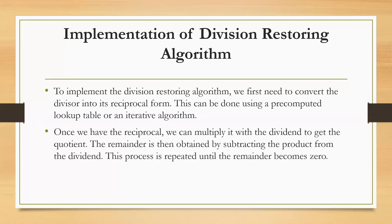After each subtraction or shift, the algorithm checks if the dividend is negative. If it is, it adds the divisor back to the dividend and sets the quotient bit to zero. This is called restoring. The process continues until the quotient has been completely calculated. Once the quotient has been calculated, the remainder can be found by subtracting the product of the quotient and divisor from the dividend.